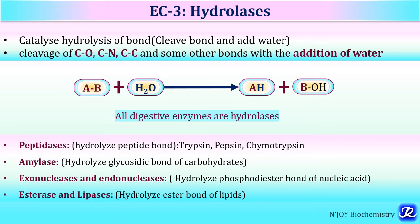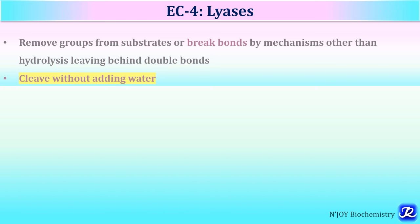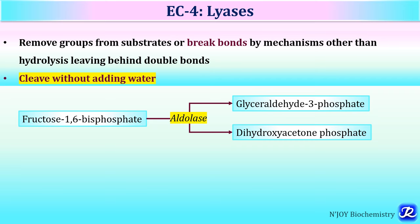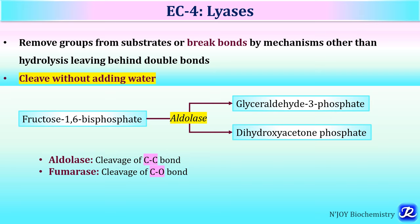EC4 is lyases. They remove groups from substrate or break bonds by a mechanism other than hydrolysis, leaving behind double bonds. Lyases break bonds without addition of water. For example, fructose-1,6-bisphosphate is cleaved into glyceraldehyde-3-phosphate and dihydroxyacetone phosphate by aldolase in glycolysis, which cleaves carbon-carbon bonds. Fumarase breaks carbon-oxygen bonds, and argininosuccinate lyase — important in the urea cycle — cleaves carbon-nitrogen bonds.